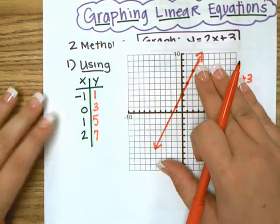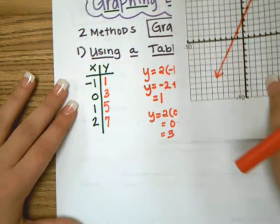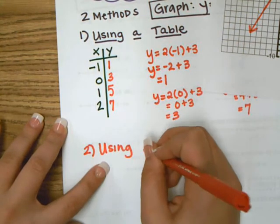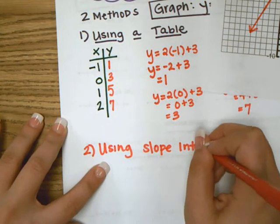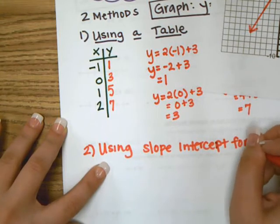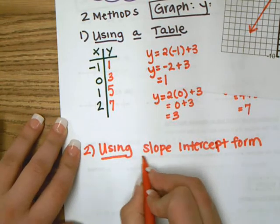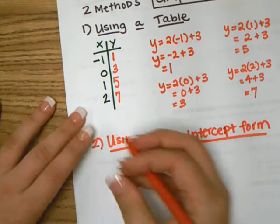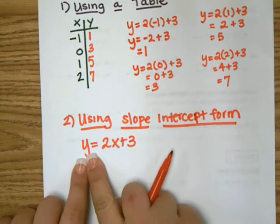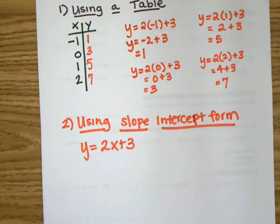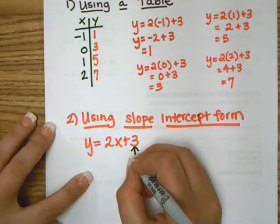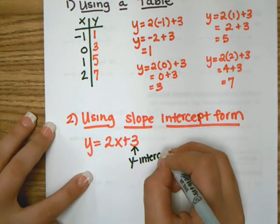Now there were two methods to graphing — that was using a table. And now method two: using slope-intercept form. So that means we're going to take our equation and make sure it's in slope-intercept form, so the y has to be by itself — which it is. It's isolated.